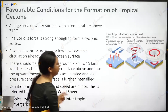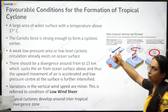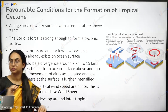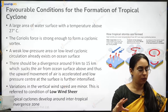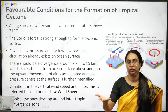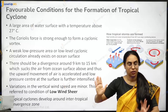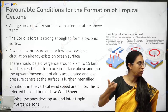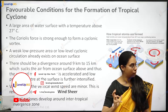What are the conditions favourable for the formation of tropical cyclones? When water is warm, with a temperature of 27 degrees Celsius, it starts evaporating. As the water evaporates, a low pressure depression is formed.